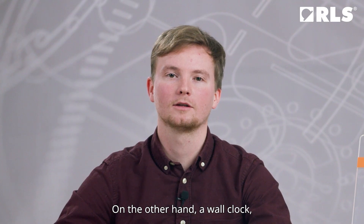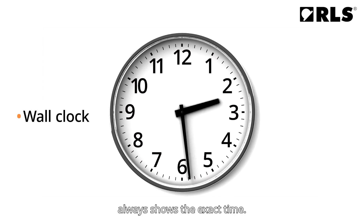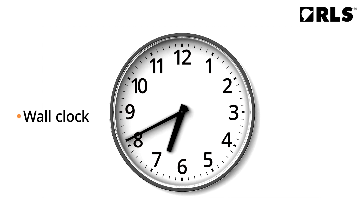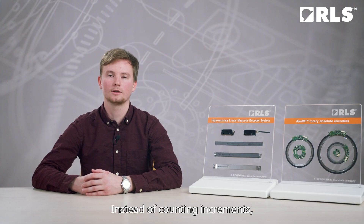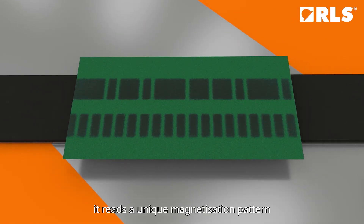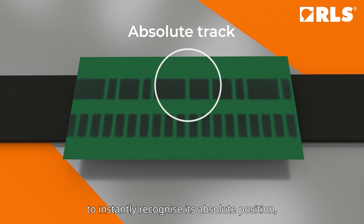On the other hand, a wall clock, like an absolute encoder, always shows the exact time. Instead of counting increments, it reads a unique magnetization pattern to instantly recognize its absolute position even after power interruptions.